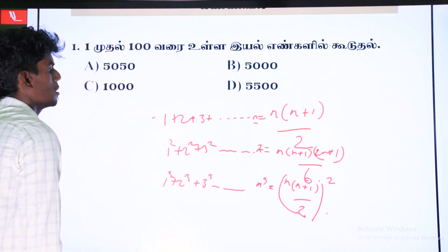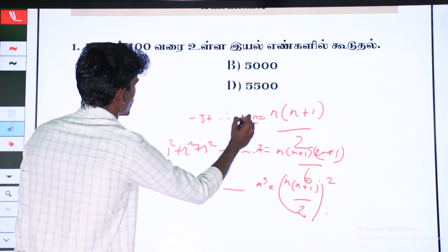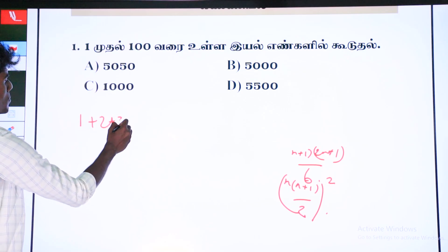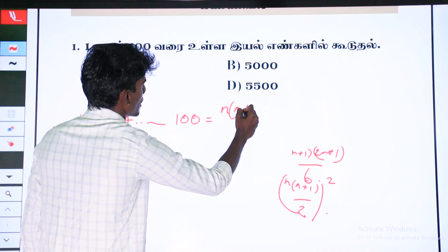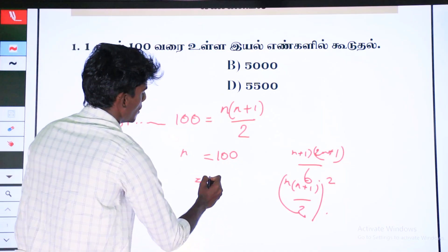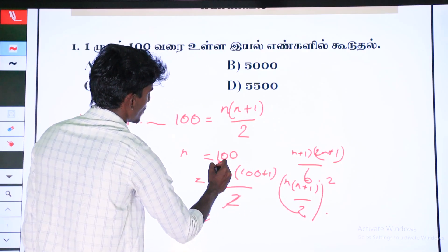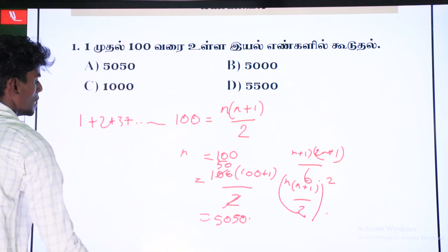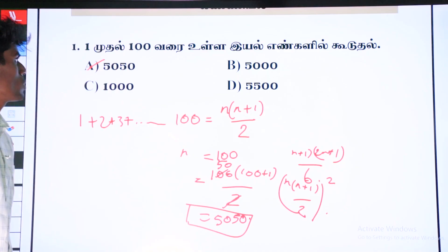Let's go to the formula. When we count using the first tip of the formula, if it comes to the formula, let's start the formula. The formula is spelled with 100, so we have to write the formula of n into n plus 1 by 2. n is equal to 100. In the second, the formula is n into n plus 1 by 2.